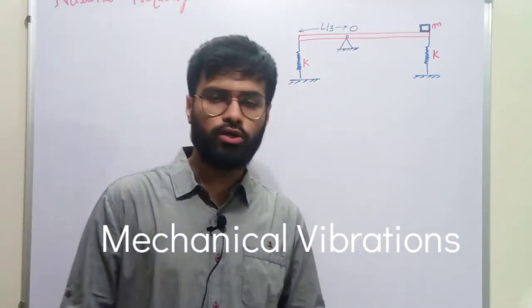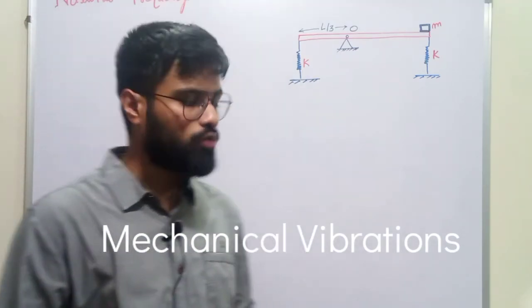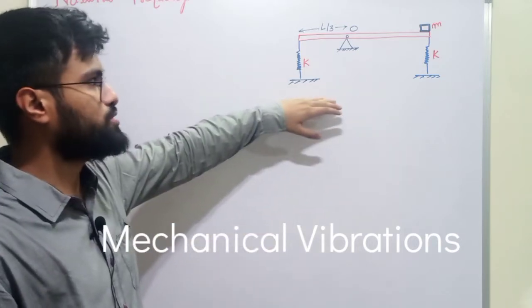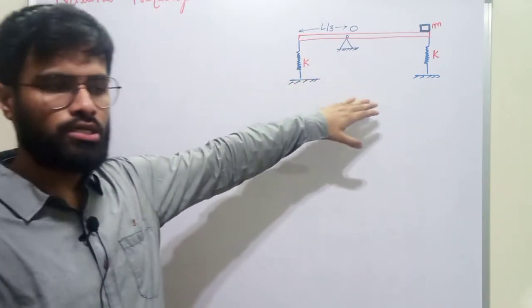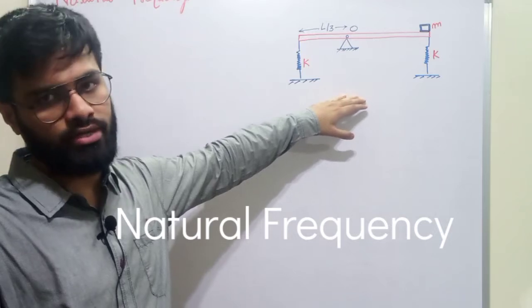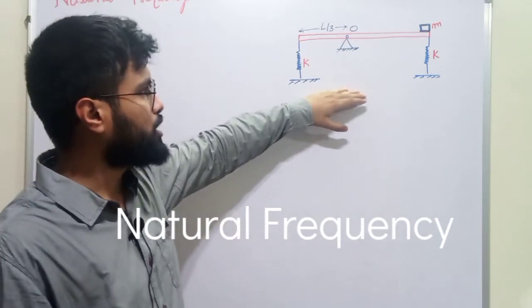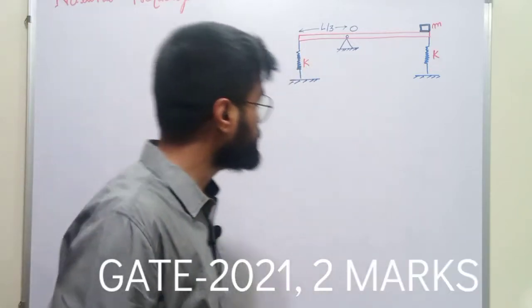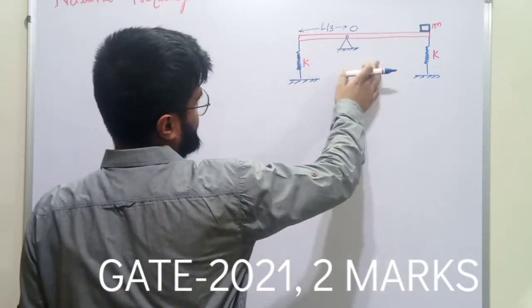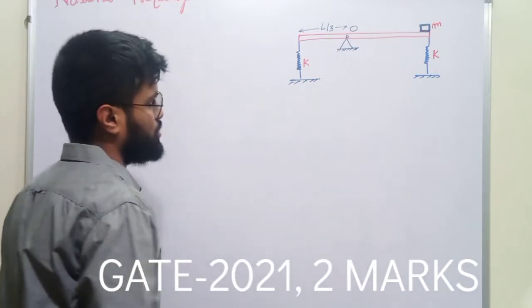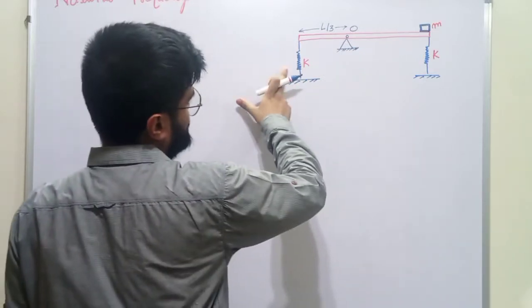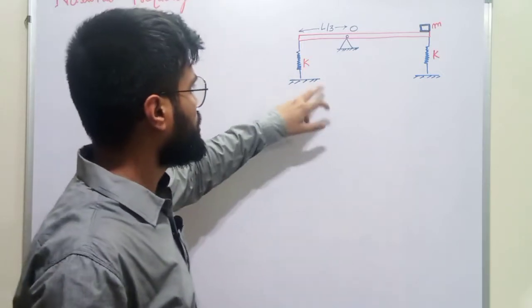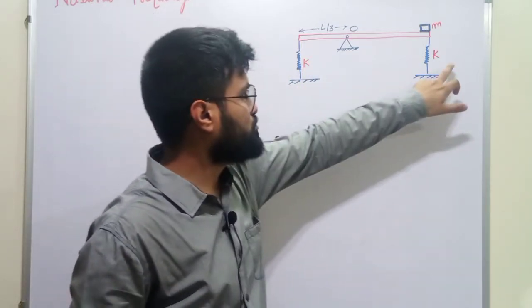Hi students, today we will discuss a problem of mechanical vibration in which we have to find out the natural frequency of the system. This question came in GATE 2017 for 2 marks. We have a rod with total length L, and we have two springs here with the same stiffness K.